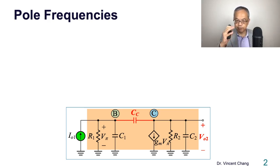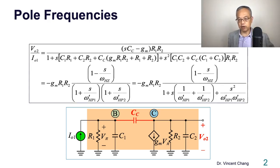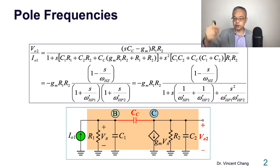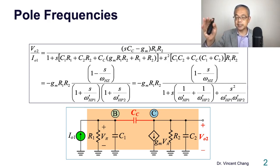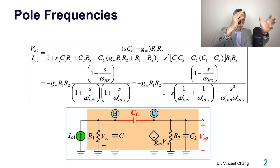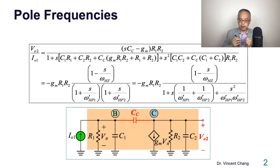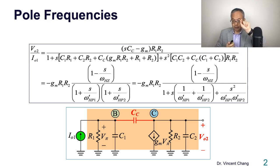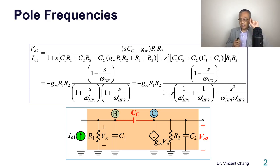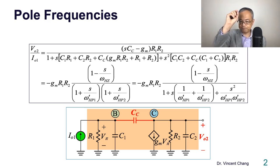So here's a Miller compensation circuit. If you solve the transfer function — the VO2, the output voltage divided by the input current IO1 — VO2 means the output voltage of the second stage. Think about a multi-stage amplifier: the input differential gain stage and the output stage. We take the output of the second stage divided by the output current of the first stage, which is the input current of the second stage. The transfer function, or transresistance, gives you two poles in the denominator and one zero in the numerator.